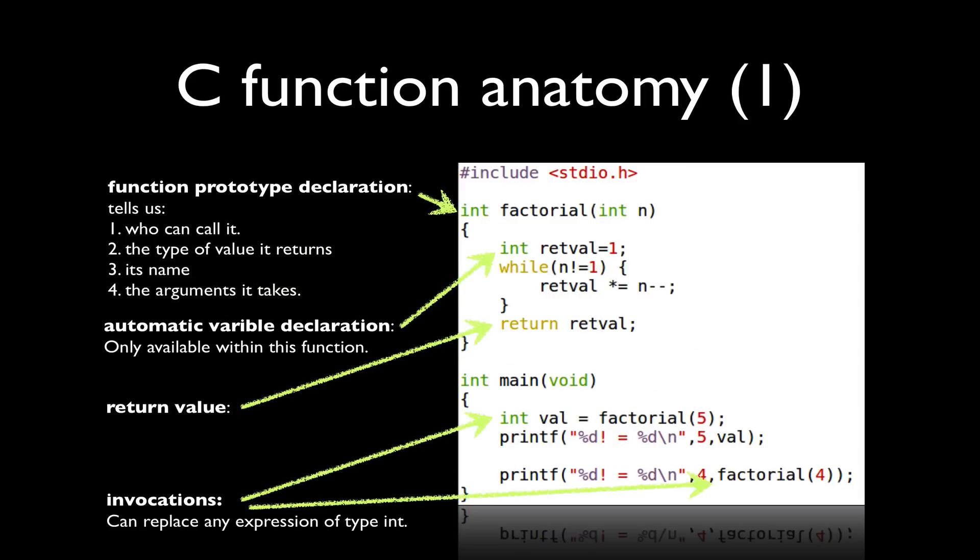Finally, we can invoke functions by referencing its name and then adding any arguments, and if it has a return value, optionally assigning that value to some variable. So in this particular case, you see where I'm calling factorial with the value 5, and I'm assigning it to another local variable, val, which is defined inside my function main.